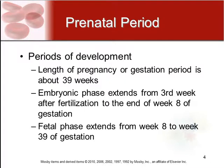The prenatal period lasts for about 39 weeks. The embryonic phase extends from the third week after fertilization to the end of the eighth week of gestation. The fetal phase extends from the eighth week to the 39th week of gestation.